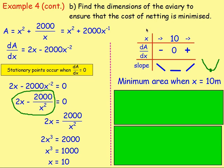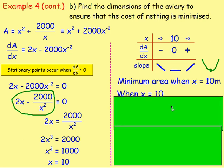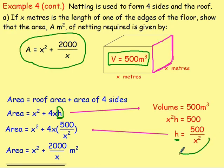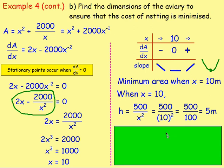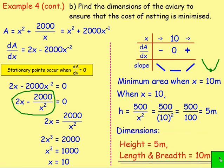The question asks for the dimensions of the aviary, not just x. Since the floor is square with side x = 10, the length and breadth are both 10 metres. The height is h = 500/x² = 500/100 = 5 metres. Therefore the dimensions are: length 10 m, breadth 10 m, height 5 m.